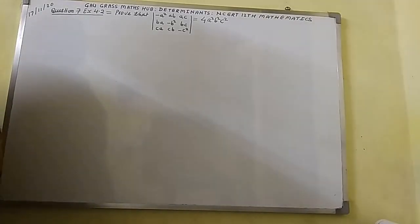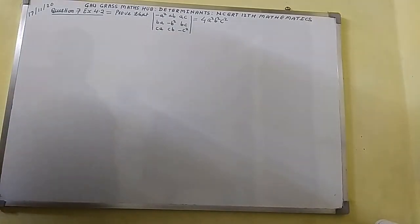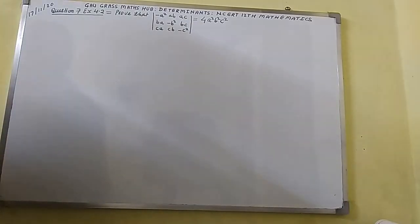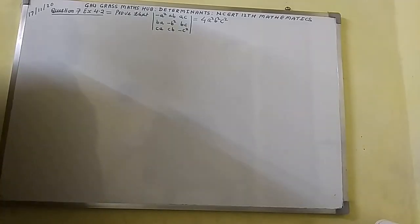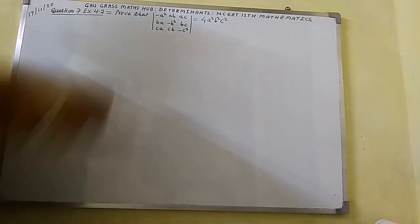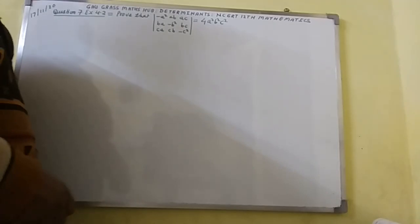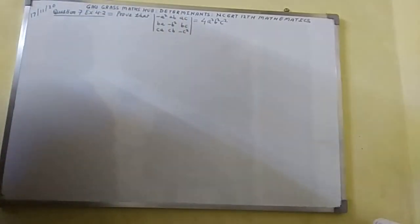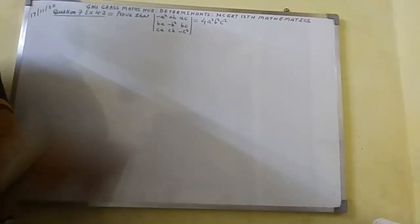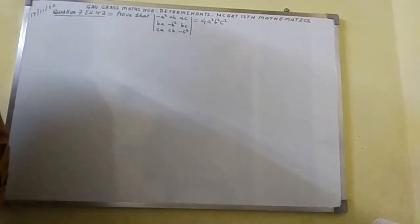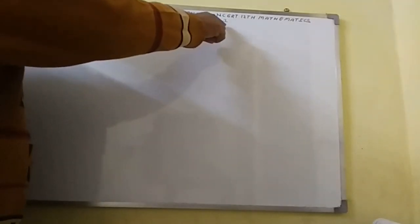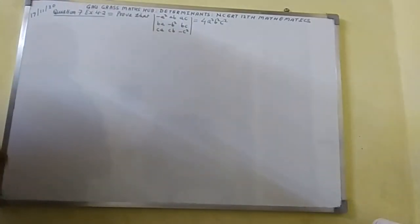I am from Gavgras Math Hub. I am going to discuss one question taken from Chapter 4, Determinants, Class 12 Mathematics. That question is Question Number 7, Exercise 4.2 — prove that the determinant with first row (−A², AB, AC), second row (BA, −B², BC), third row (CA, CB, −C²) is equal to 4A²B²C².